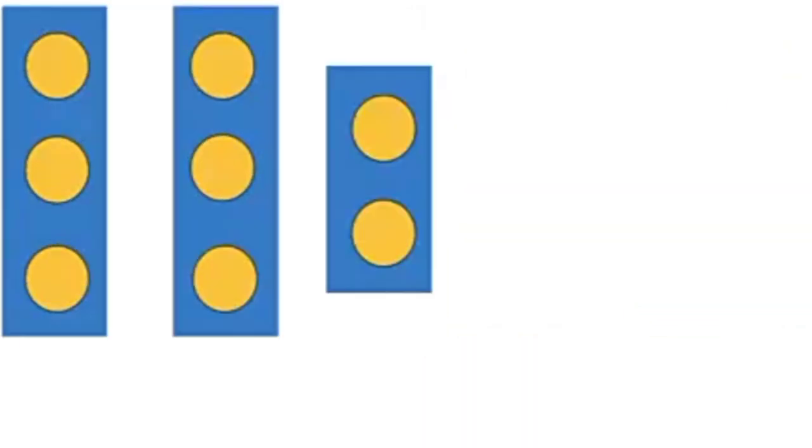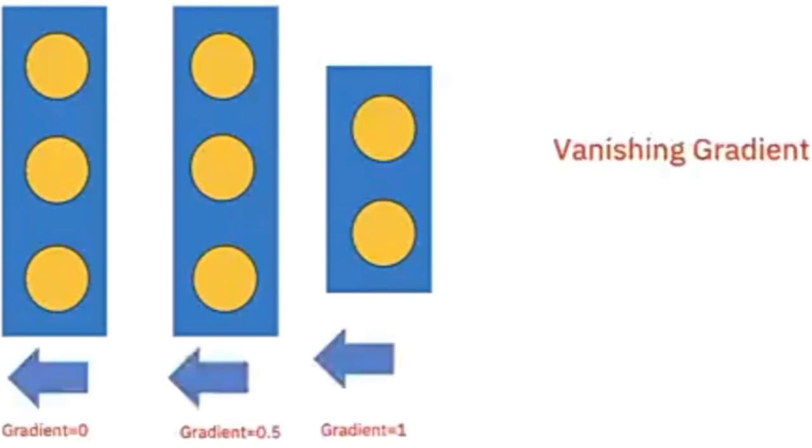It turns out that deep networks work better but are hard to train. If you recall, to perform gradient descent to obtain our learning parameters, we have to calculate the gradient. But the deeper the network the smaller the gradient gets. This is called the vanishing gradient. As a result, it's harder to train the deeper layers of the network.